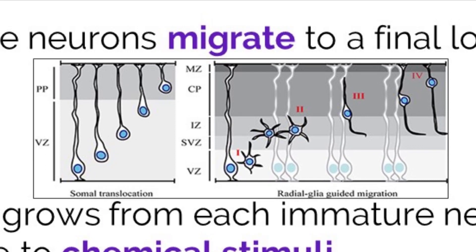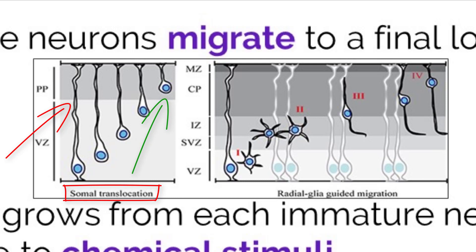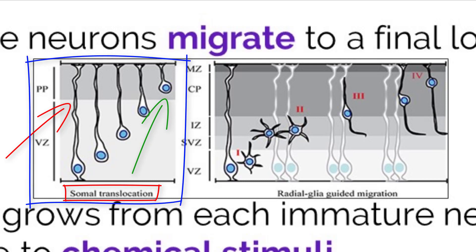The first method of movement is done through somal translocation. This is when the neuron forms an extension off of the cell body and pulls itself to its desired location, which is depicted here.